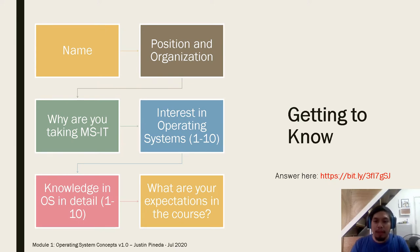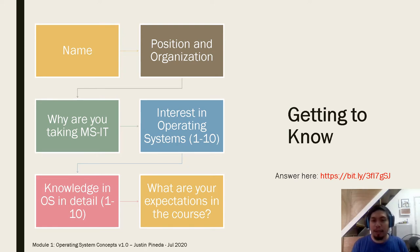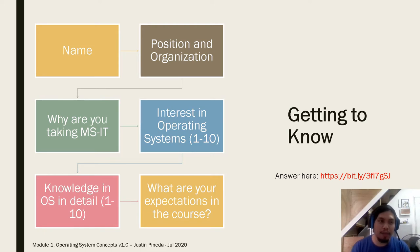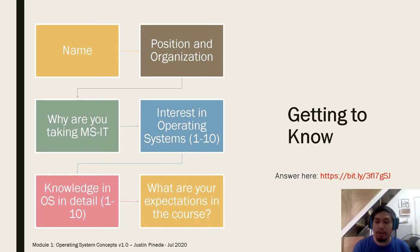Before we start, we'll have a getting-to-know activity. I'll ask your name, position, and organization where you're taking MSIT. Your interest in operating systems — you can rate it 1 to 10. Your knowledge in operating systems in detail, specifically the algorithms, different process scheduling algorithms, memory management, etc. — you can rate that also. And your expectations in the course. I have included a Google Forms link where you can answer all these questions.